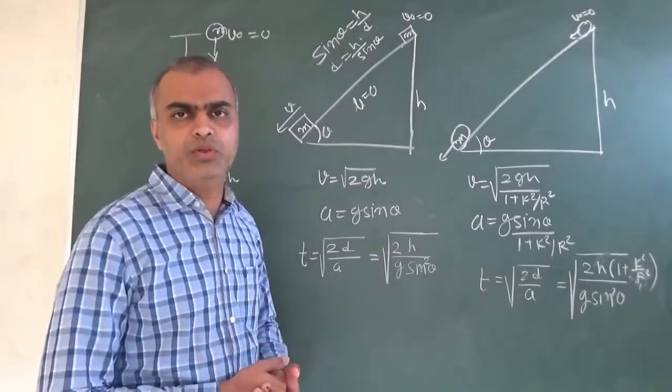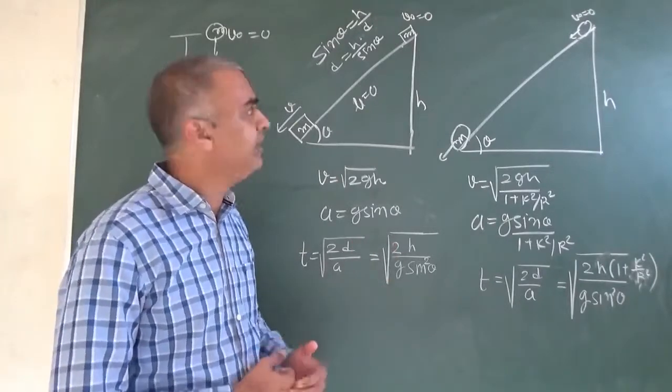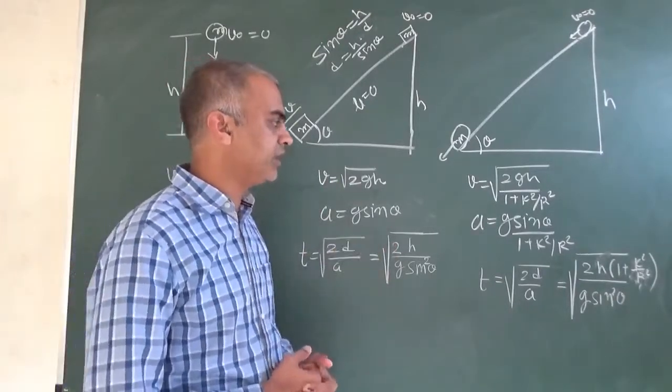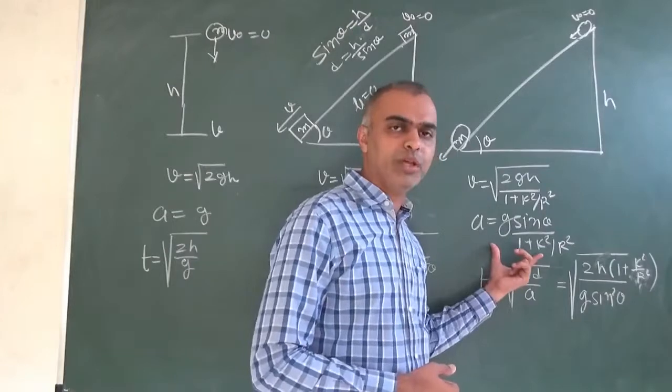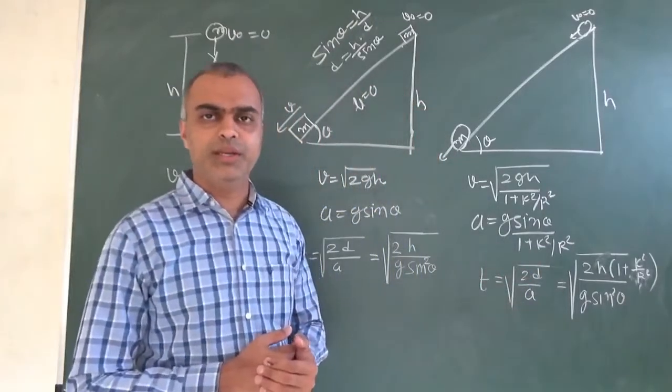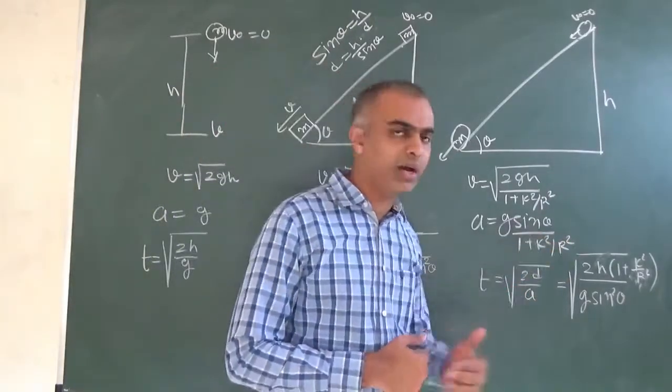This is G sin theta minus mu g cos theta. This is G sin theta minus mu g cos theta, G sin theta divided by 1 plus k square by r square.